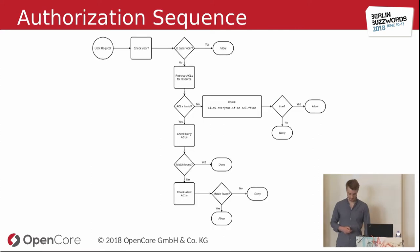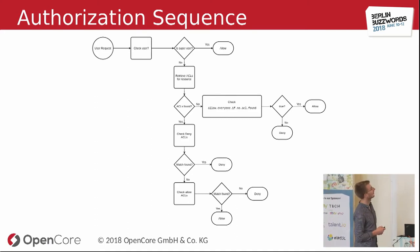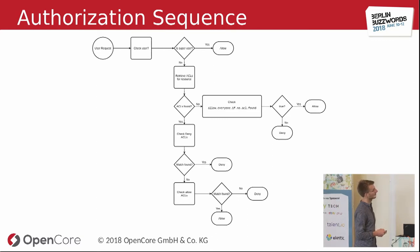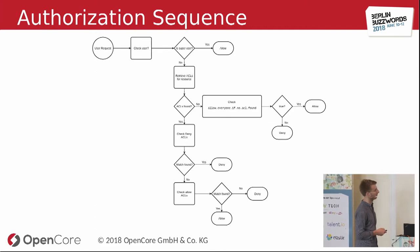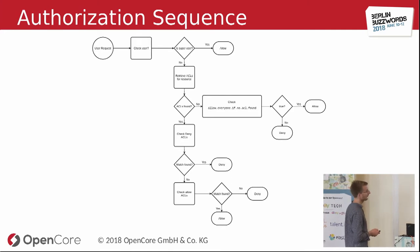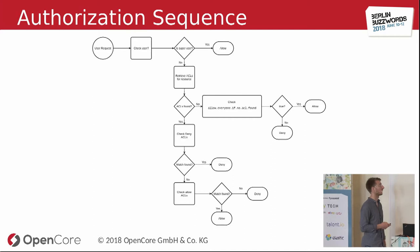Here's the full authorization sequence: when a request comes in, if the user is a super user we allow immediately. Otherwise we retrieve ACLs for the requested resource. If there are none, we check a broker configuration parameter — if true, we allow; if false, we deny. If there are ACLs, we first check whether anything should be denied; if yes, deny. If no deny match, we check for an allow ACL and grant or deny based on that.